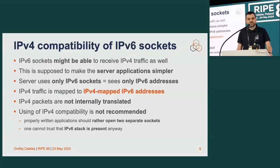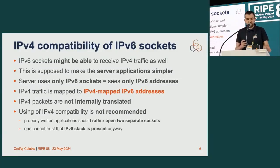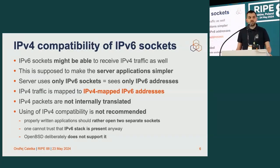Even if your server operates IPv4-only, it still needs IPv6 internally to communicate between components. There are also security implications, and OpenBSD deliberately decided not to support this — you cannot get an IPv4-compatible IPv6 socket in OpenBSD.